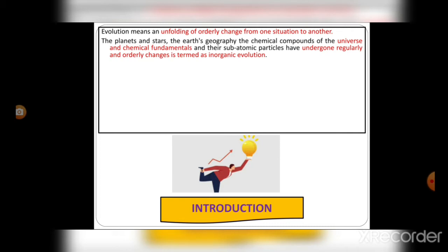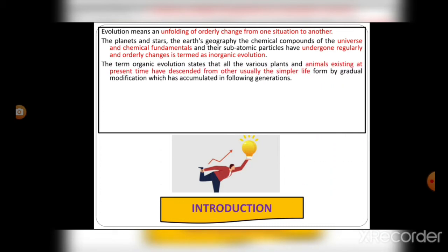The term organic evolution states that all the various plants and animals existing at the present time have descended from other, usually simpler life forms by gradual modifications which have accumulated in following generations.